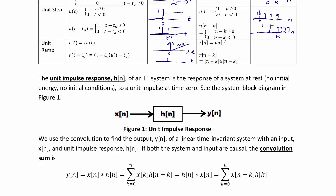The shifted continuous ramp is 0 up to t-naught, then also rises with a slope of 1. In discrete time, the horizontal axis is n with 0s up until n equals 0, then the lollipops rise with a slope of 1 — so at 1, 2, 3, 4, the amplitudes are 1, 2, 3, and 4 respectively. For the shifted discrete ramp, we have 0s up to k, then at k plus 1 the value is 1, at k plus 2 it's 2, at k plus 3 it's 3, and so on.